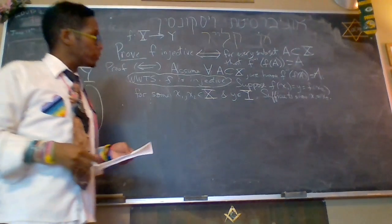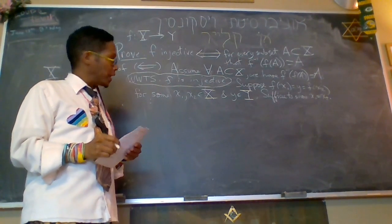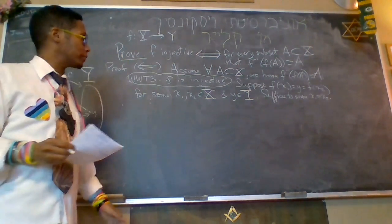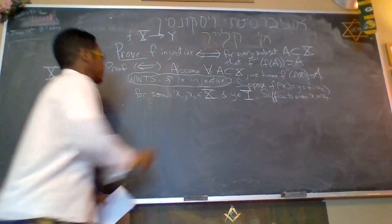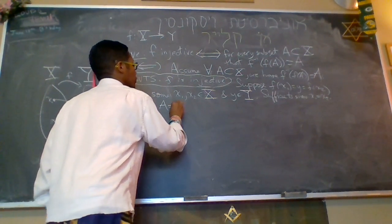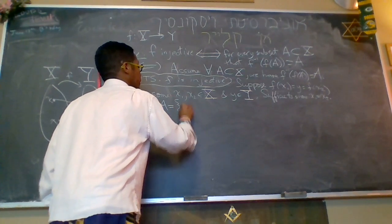Okay, this is going to look similar to the other proofs that I did by contrapositive, but this will be discernibly different because we're proving completely different things. Okay, so let's set A to be equal to the set containing x2.